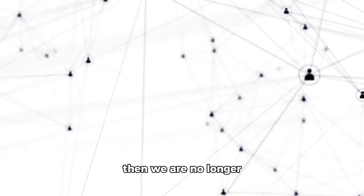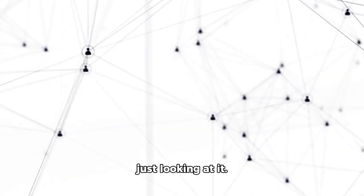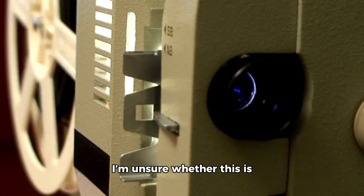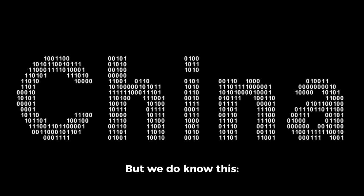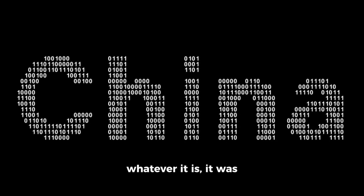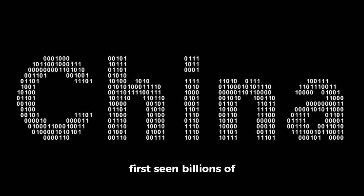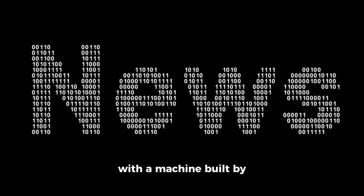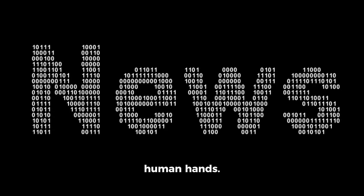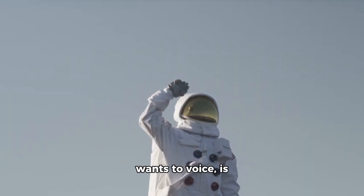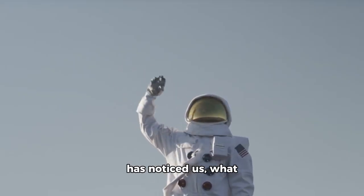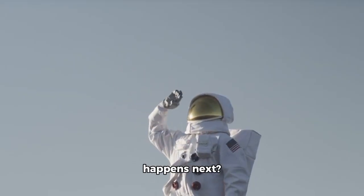If this is a network, then we are no longer just looking at it. We are inside it. Everything is affected. I am unsure whether this is surveillance, contact, or something more subtle. But we do know this: Whatever it is, it was first seen billions of miles away, interacting with a machine built by human hands. The remaining question, the one no one at NASA wants to voice, is simple: If the system has noticed us, what happens next?